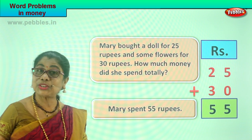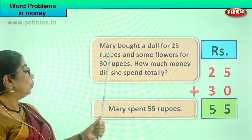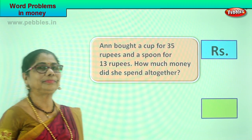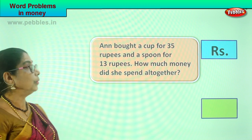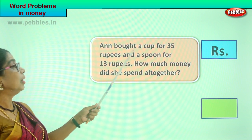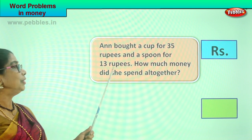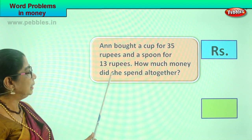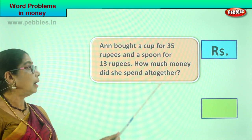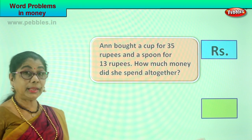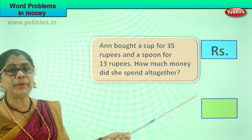Did you enjoy shopping with Mary? Good. Let's take another word problem and go shopping. Now here is Anne. She would like to go shopping with her mom. What does she want to buy? Anne bought a cup for rupees 35 and a spoon for 13 rupees. Mummy wants to know how much money she spent all together, because she has to give the shopkeeper. You are going to find out the amount she spent on a cup and a spoon.